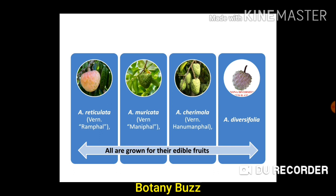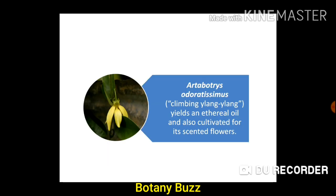Plants of family Annonaceae grown for edible fruits include Annona reticulata, Annona muricata (Soursop), and Annona diversifolia — these are plants which have delicious and edible fruits. Artabotrys odoratissimus, commonly called Climbing Lang Lang, yields an ethereal oil and is also cultivated as a scented plant.